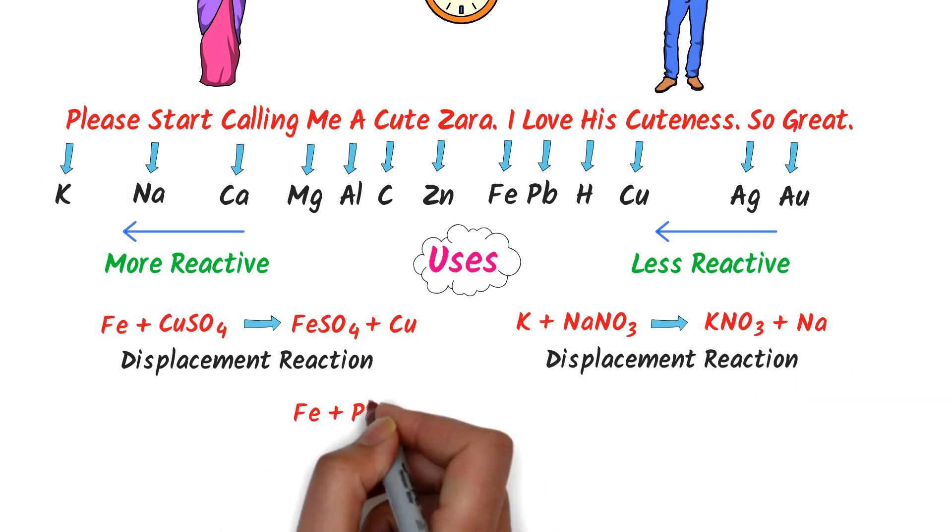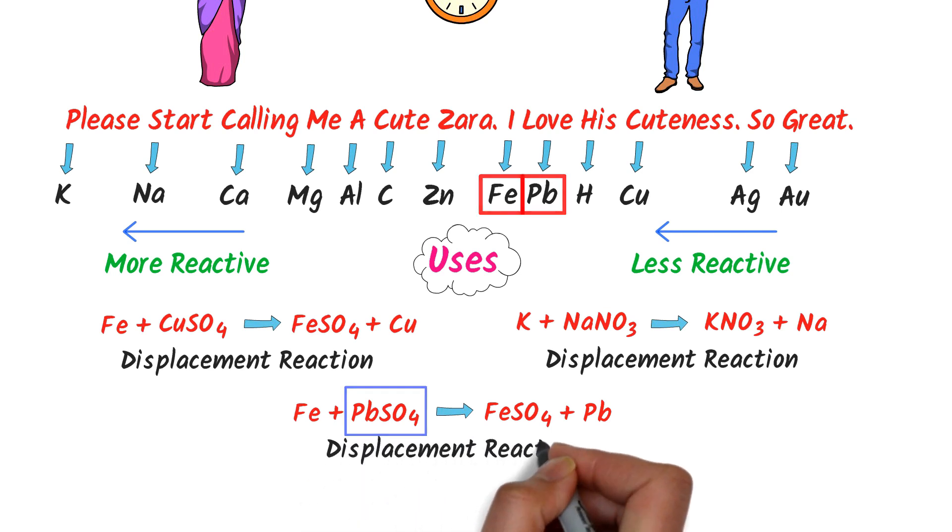Thirdly, iron plus lead sulfate react together to form iron sulfate plus lead. In the reactivity series, iron is above than lead. So iron is more reactive and lead is less reactive. That's why iron is displacing the lead from the lead sulfate.